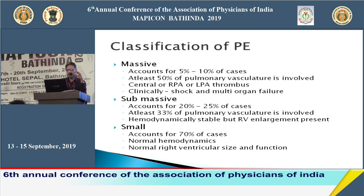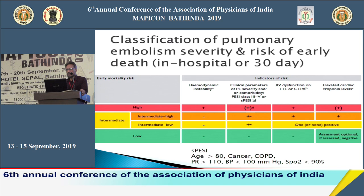The small pulmonary embolism group constitutes patients who have dyspnea with no cause found — normal X-ray, normal ECG, normal echo — and CT is not performed to confirm or exclude the diagnosis. The 2019 ESC guidelines have revised the classification into high, intermediate, and low risk groups based on hemodynamic instability, clinical PE severity index, RV dysfunction on echo or CT, and elevated troponin or BNP.